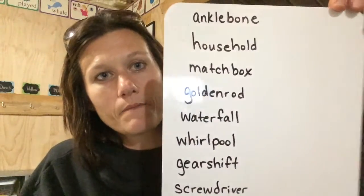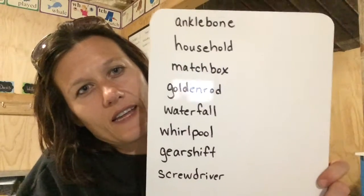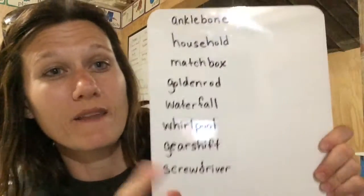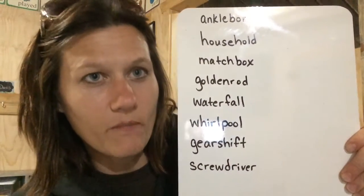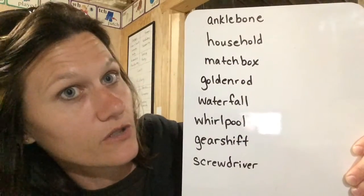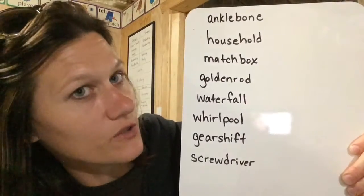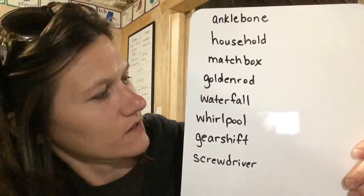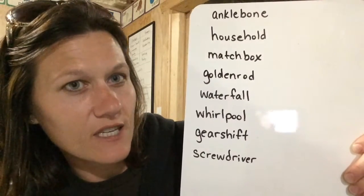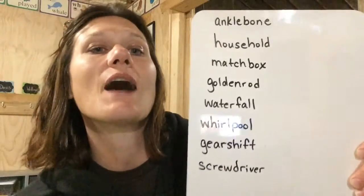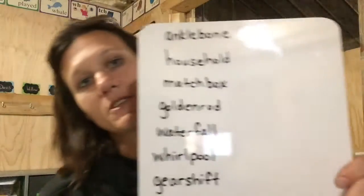I want you to look at these words. You are going to write them down on your paper — push pause. I'm going to read them for you: anklebone, household, matchbox, goldenrod (which is kind of a flower), waterfall, whirlpool, gearshift, screwdriver. These words are getting kind of long. Pause it, write them down, and mark the special sounds and vowels.